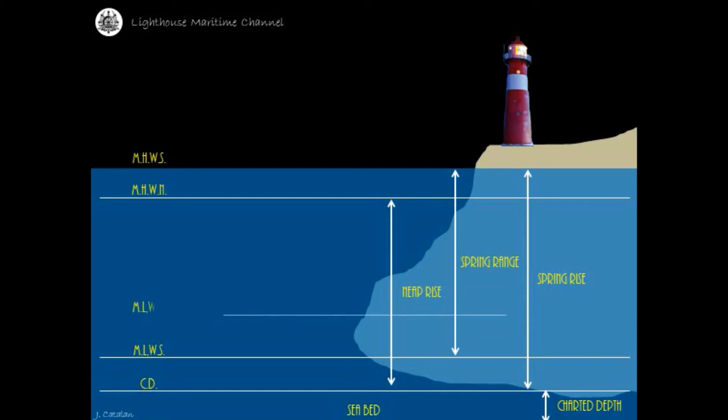Mean low water neap is the average height of all low waters occurring at the time of neap tides. Neap range is measured from the mean low water neap to the mean high water neap.